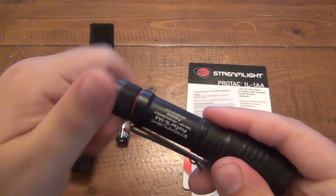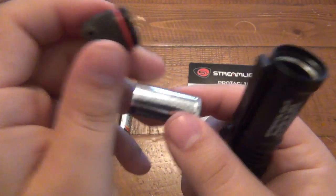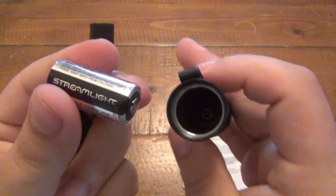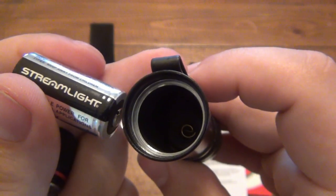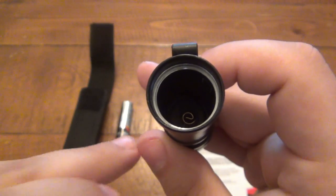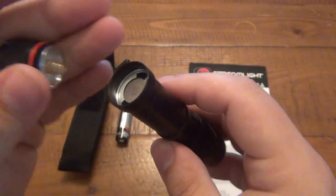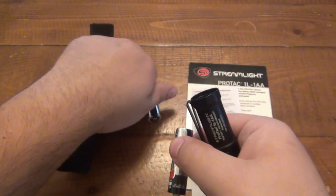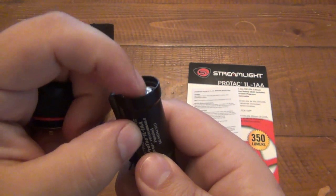So this light is a single CR123. That's what it uses. And you can see down in there, our spring for a positive contact. But that body piece inside is actually retractable. It's also on a spring underneath. So you can use a single AA as well. So this obviously fits a CR123. So you're thinking, how is a AA going to fit in there? Well, it doesn't look like it will, but it's on a spring system.